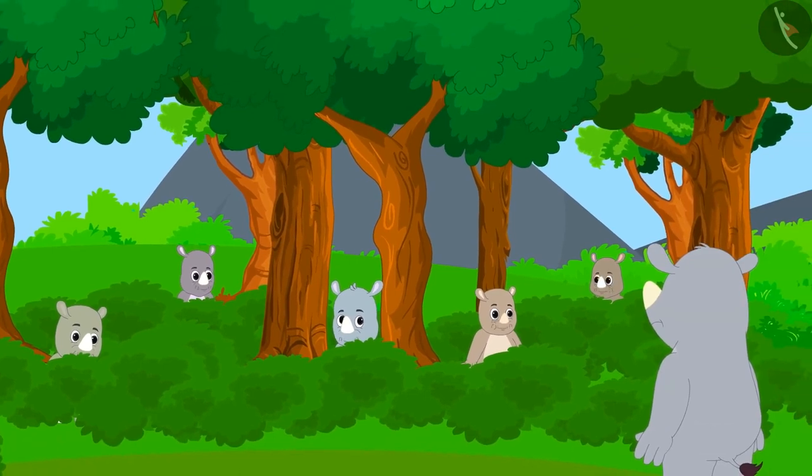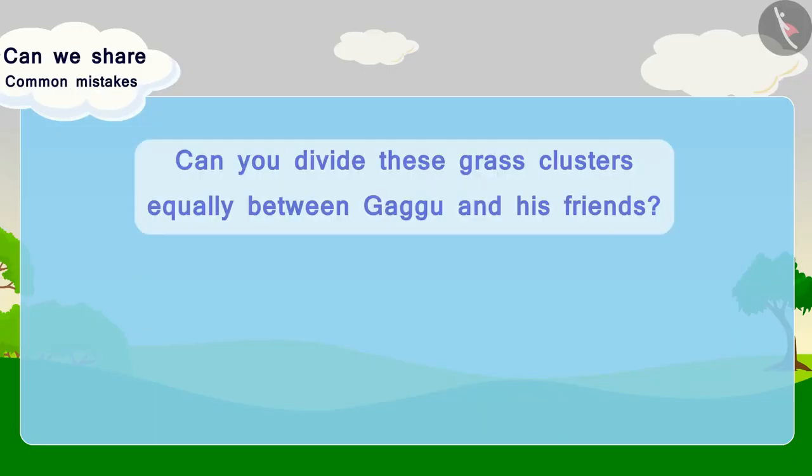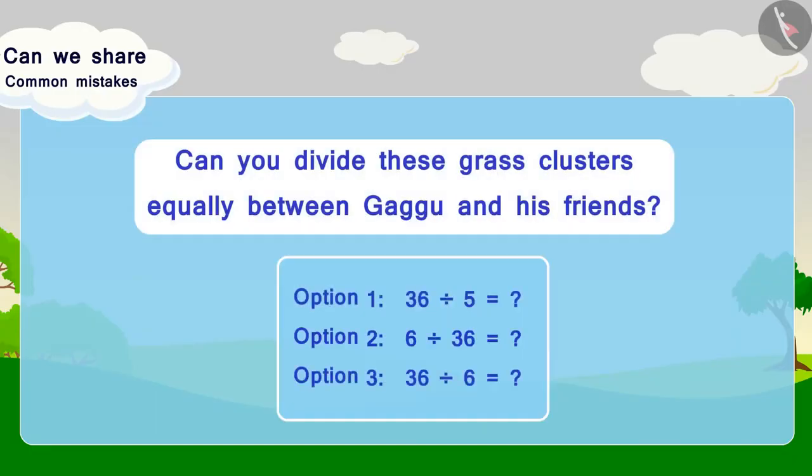Can you divide these grass clusters equally between Gaggoo and his friends? Can you choose the correct option from the options given below? Let us evaluate each option to find the right one.